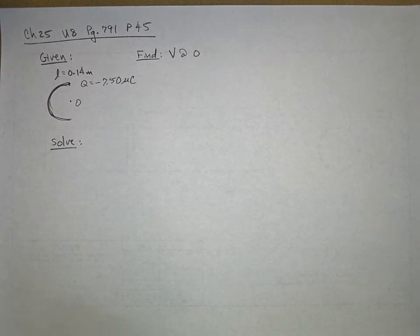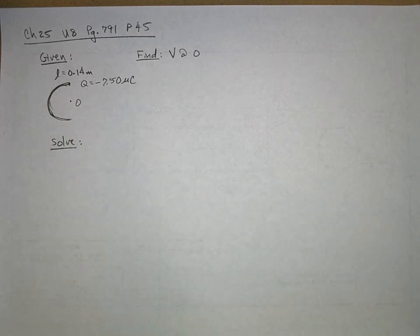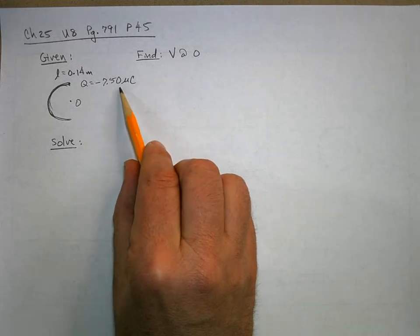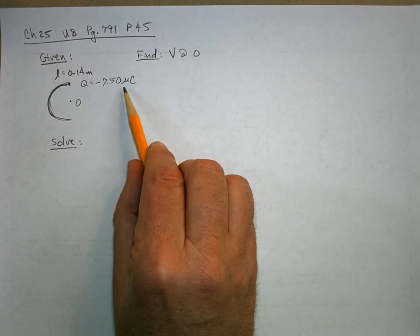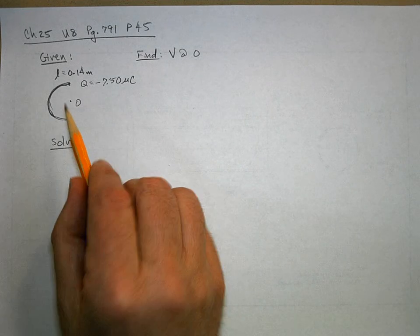The problem reads: a uniformly charged insulating rod of length 14 centimeters is bent into the shape of a semicircle as shown in this figure. The rod has a total charge of negative 7.50 microcoulombs. Find the electric potential at O, the center of the semicircle.